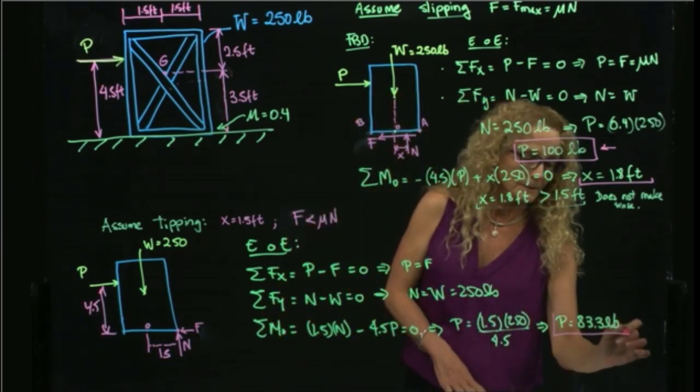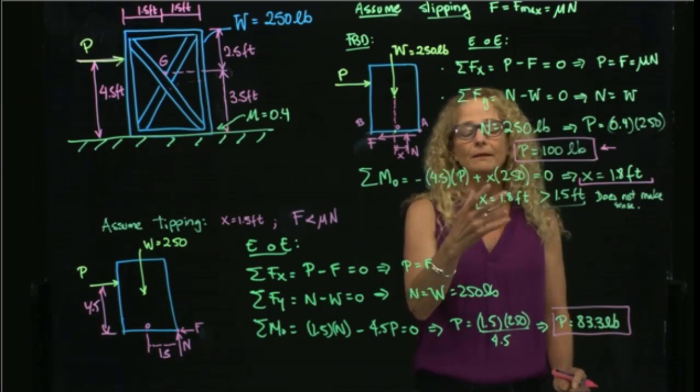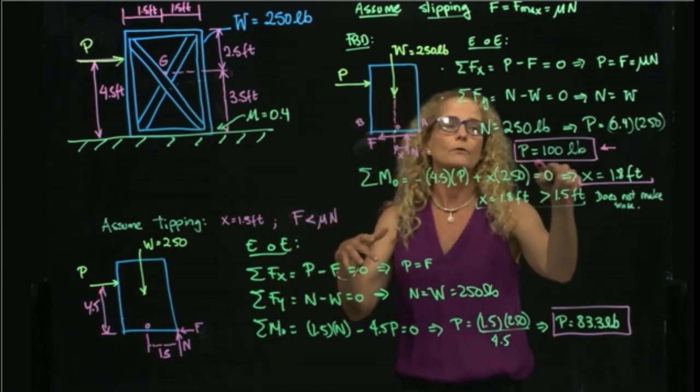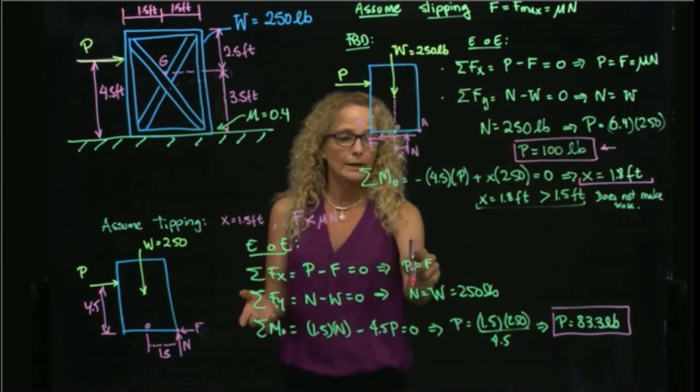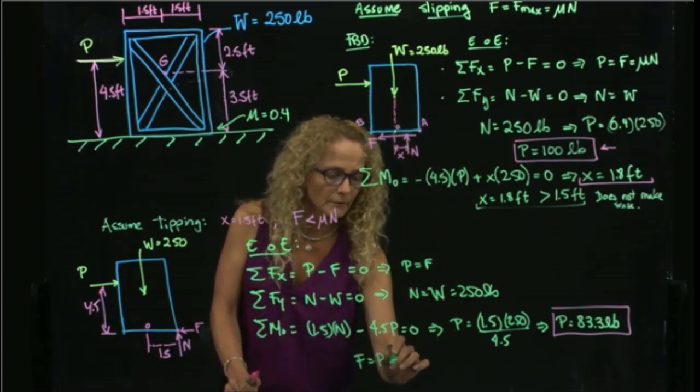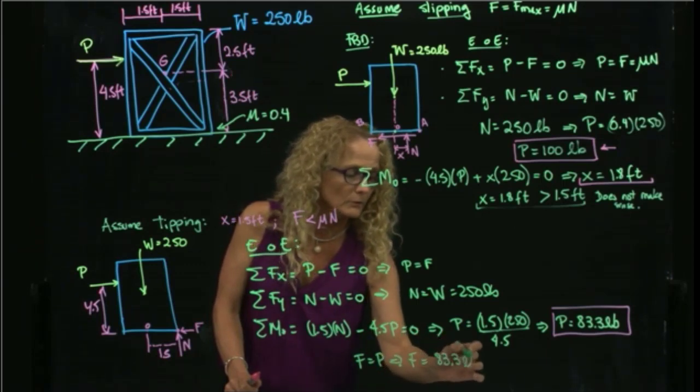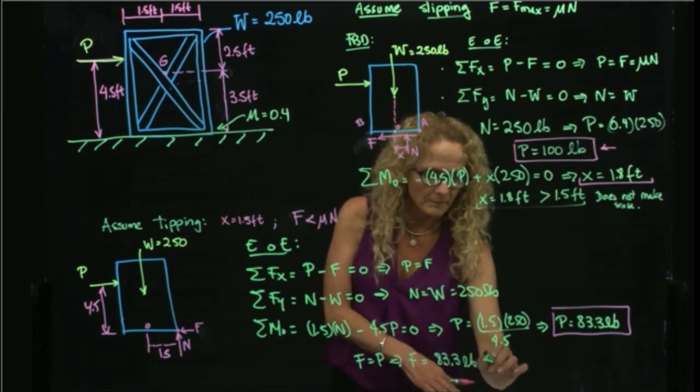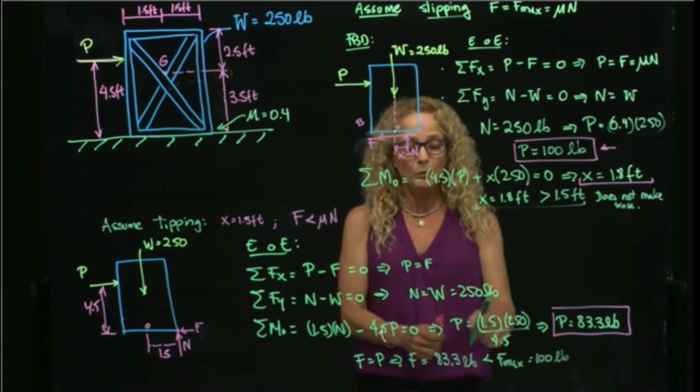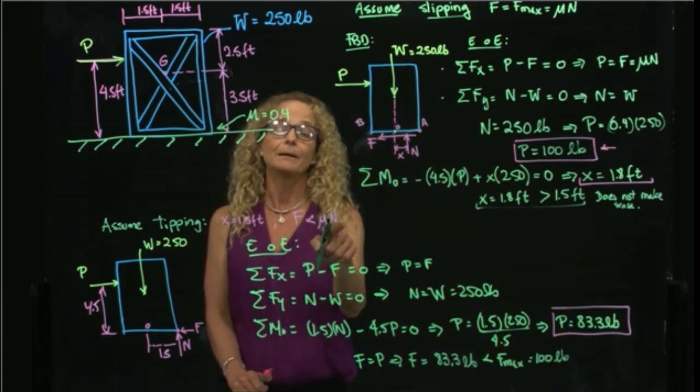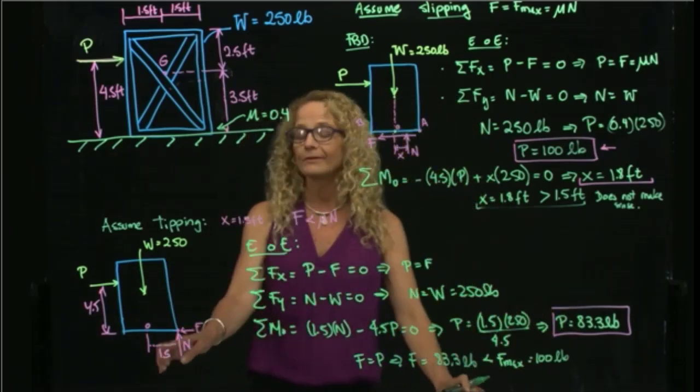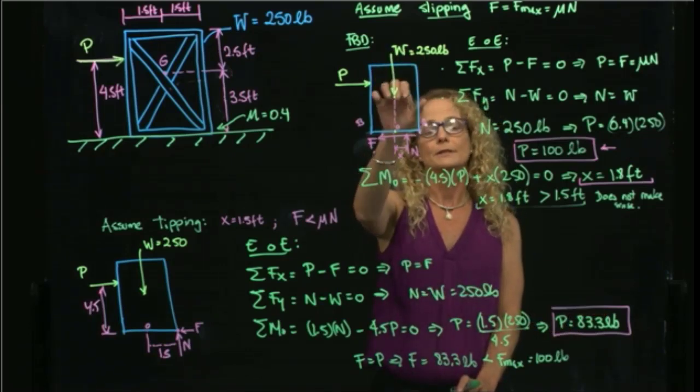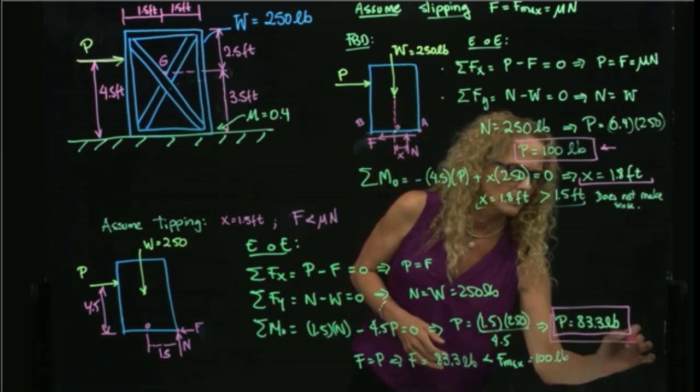so as you see, my force P is less than this one. It means that it tipped first, because once I reach 83.3, the crate already tipped, so I was never able to reach a force of 100 pounds. And, of course, we can calculate also F. F is equal to P, therefore F is equal to 83.3 pounds, and that's less than the mu times N that we already found, because the maximum was 100. So, we already proved that the force F is less than the maximum, right, right here, and we already proved that having the normal force right at the corner leads me to a smaller force than trying to force the slipping condition. So, this will be the answer.